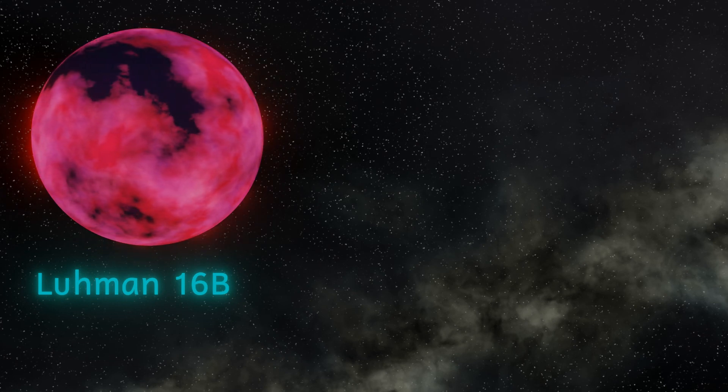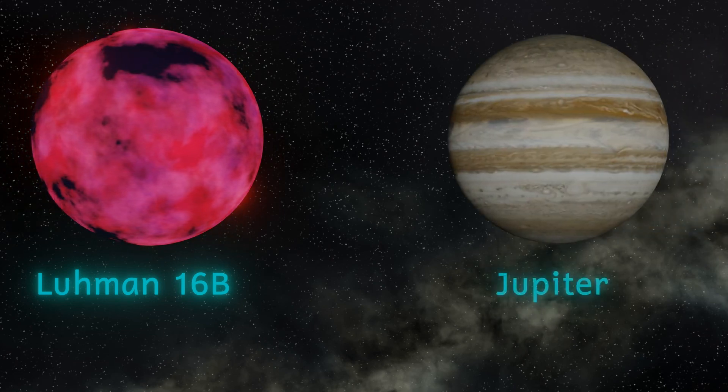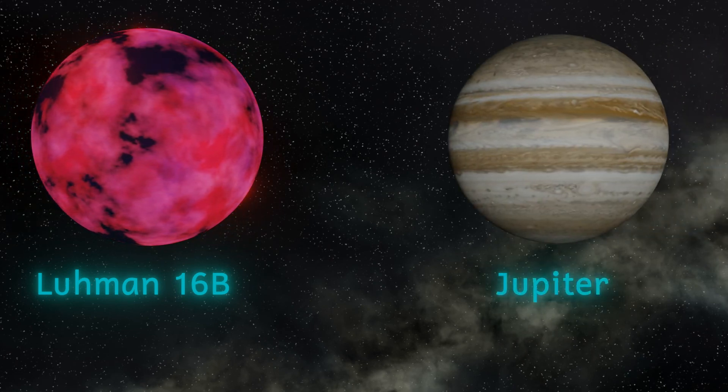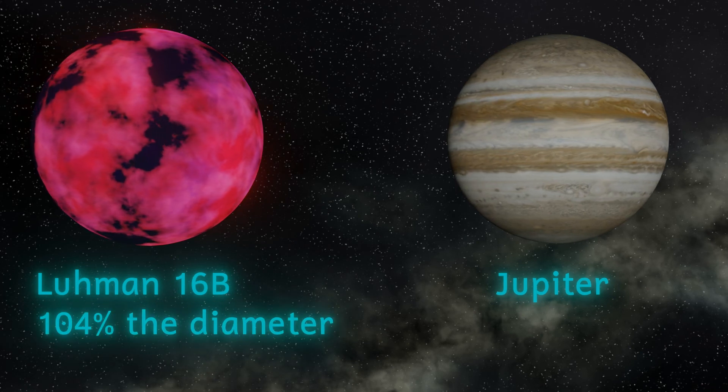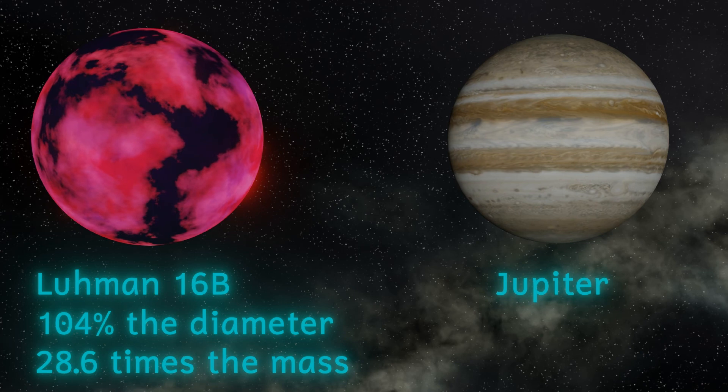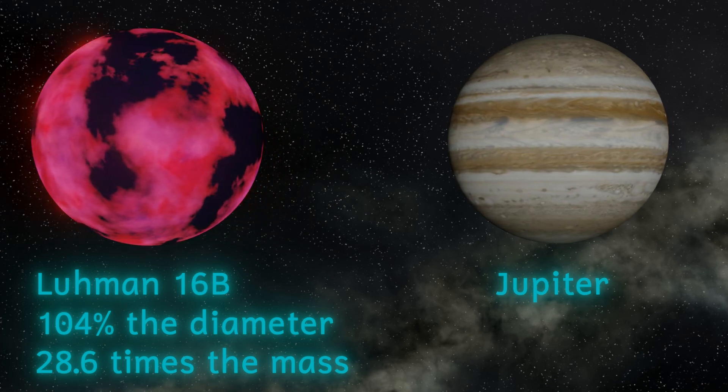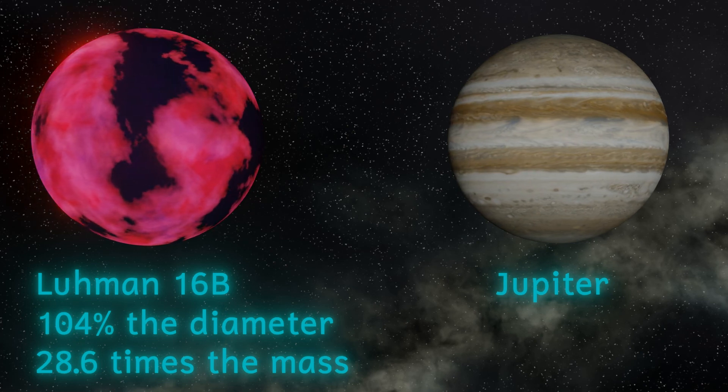16B is a T-type brown dwarf, which to our eyes would glow faintly magenta or purple. This star is actually slightly larger in diameter than the planet Jupiter and has a mass 28.6 times as much. It also has a surface temperature of 1210 kelvin or about 930 degrees Celsius.